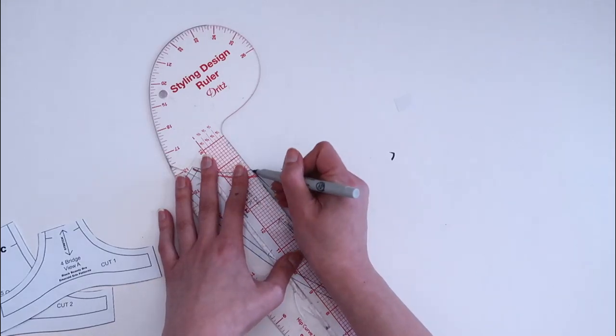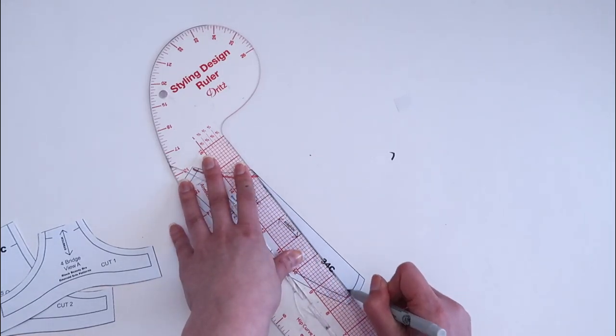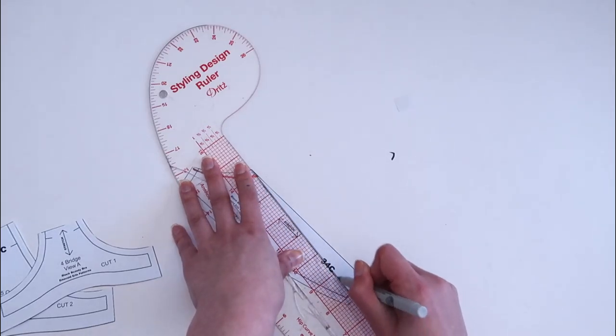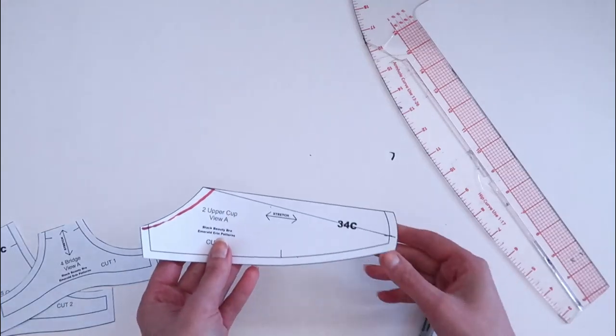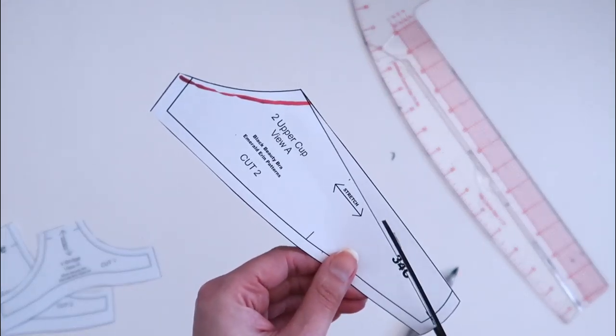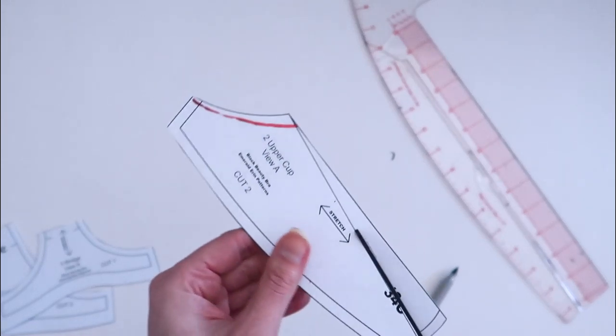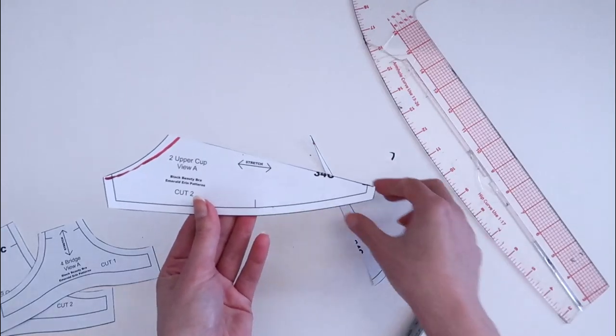And I'm going to connect this with a straight line because I still want to be able to use lace fabric. So I need to make sure that I have a straight line that I can align with my lace. So I have something that looks like this. And then all we need to do is trim that pattern piece down.